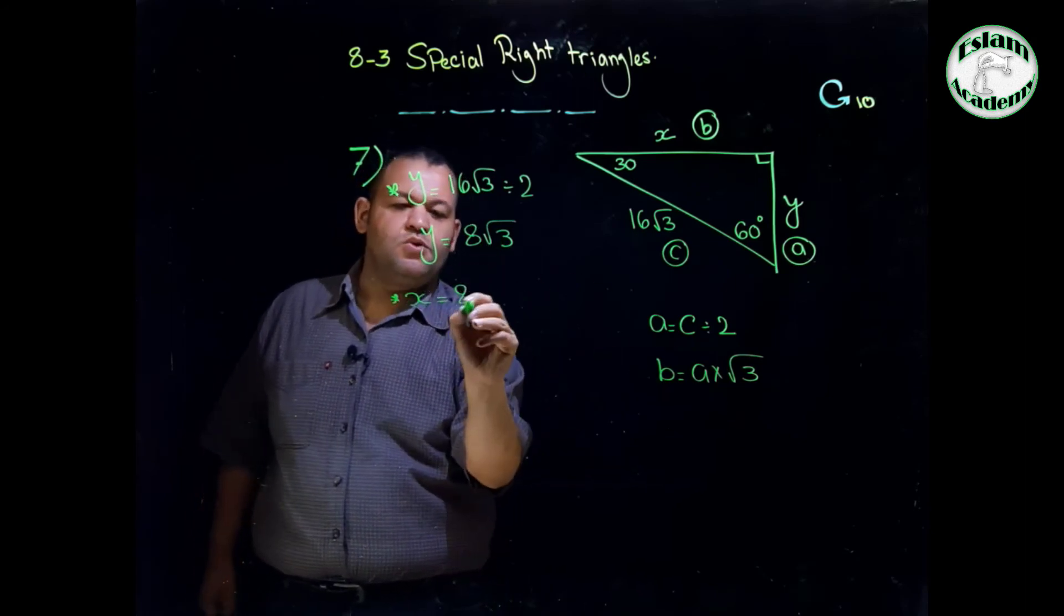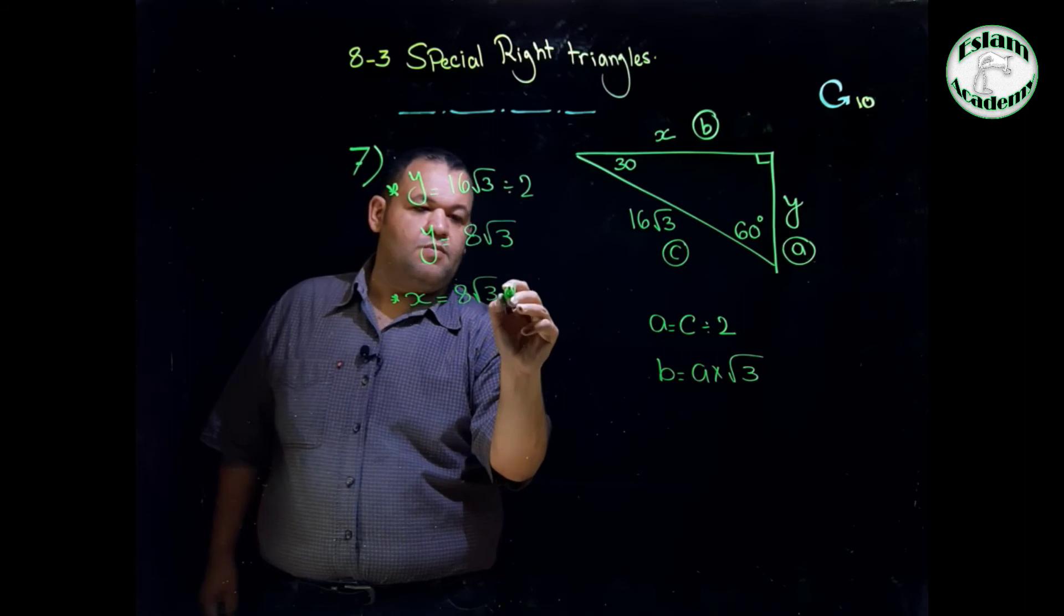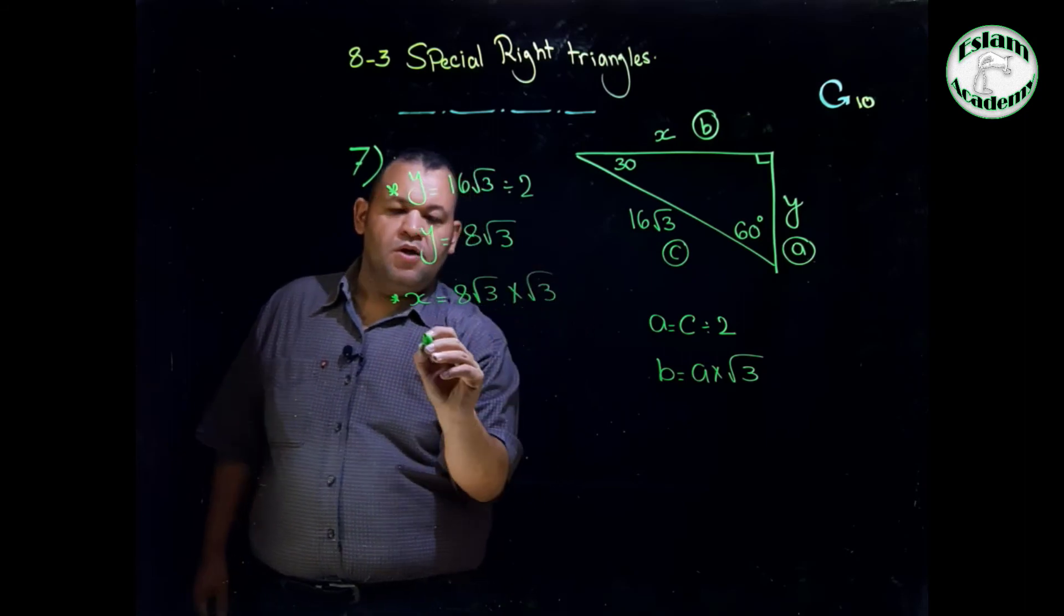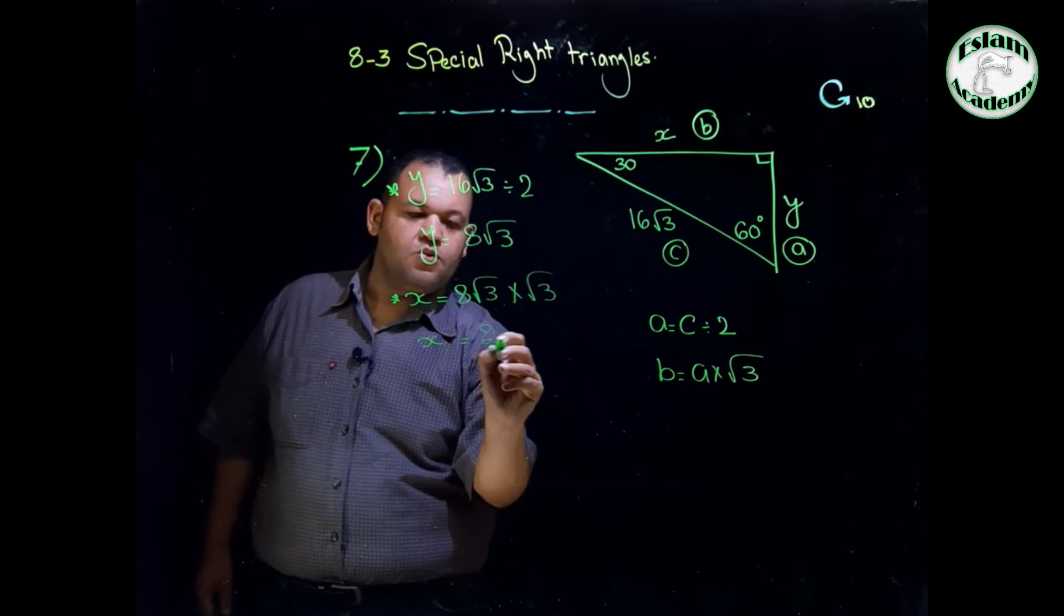We found that the value of A is 8 root 3 multiplied by root 3. So the value of X equals 24.